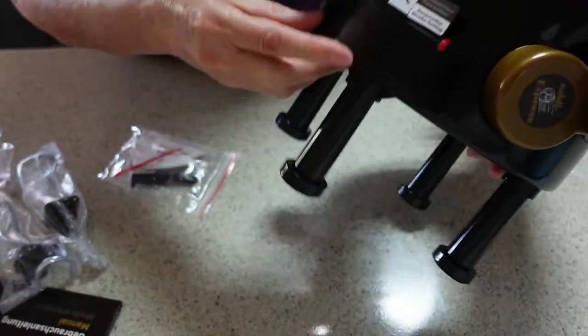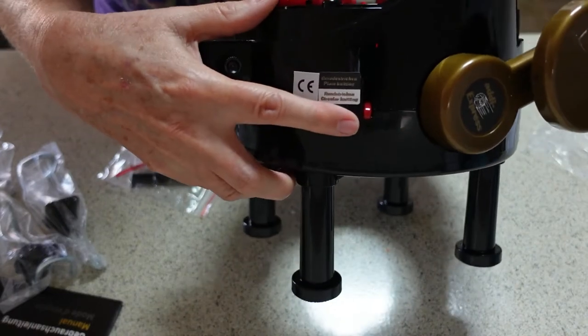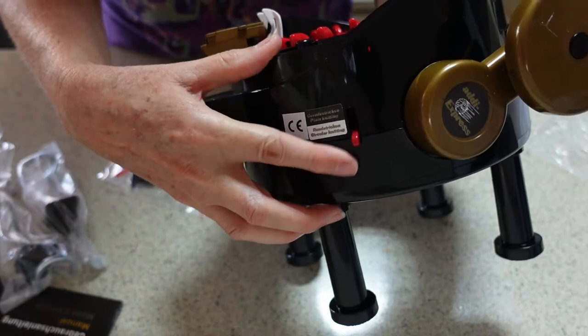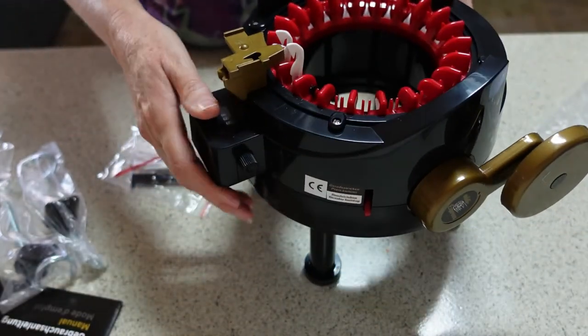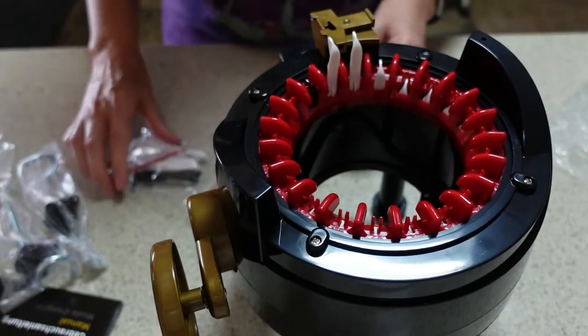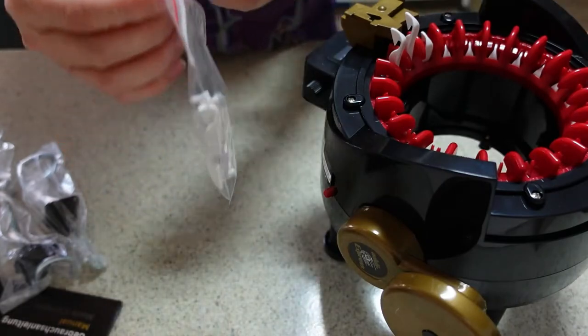I didn't notice this before - there's a little switch here on the side which is to change from tubular knitting, which is the bottom setting, or flat knitting, which is the top setting. So, I have got the legs in.